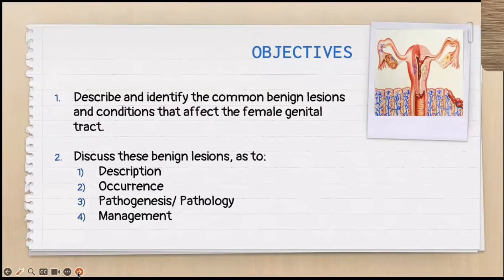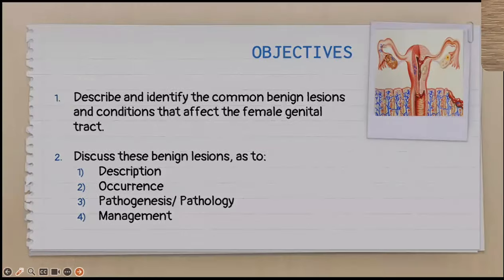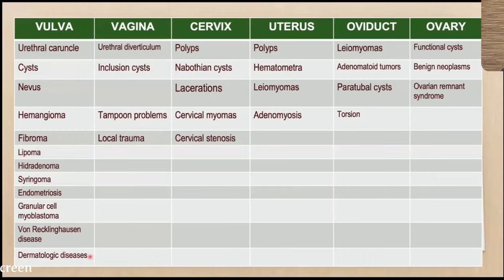For today, we're going to describe and identify the common benign lesions and conditions that affect the female genital tract. We will discuss these lesions in terms of description, incidence, pathogenesis, and management. If you read your book and open the chapters on benign lesions, chapter 18, you will find a lot of relevant information.